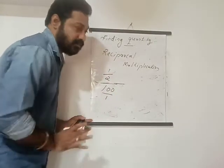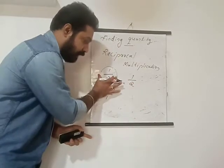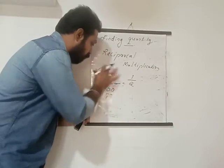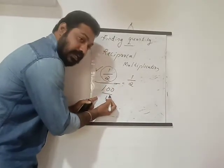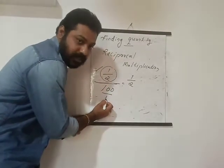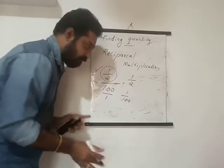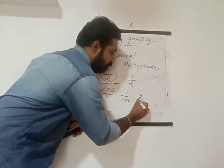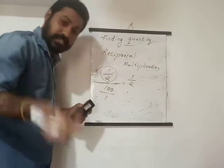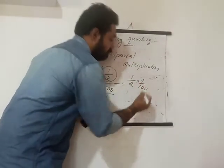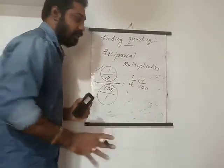So 1/2 divided by 100/1 becomes: keep 1/2 as numerator, take the reciprocal of 100/1, which is 1/100, and multiply. Understand — 1/2 is the numerator part and 100/1 is the denominator. The reciprocal of 100/1 is 1/100. For example, the reciprocal of 3/4 is 4/3. So you take the reciprocal of the denominator and multiply with the first number. This is called reciprocal multiplication.